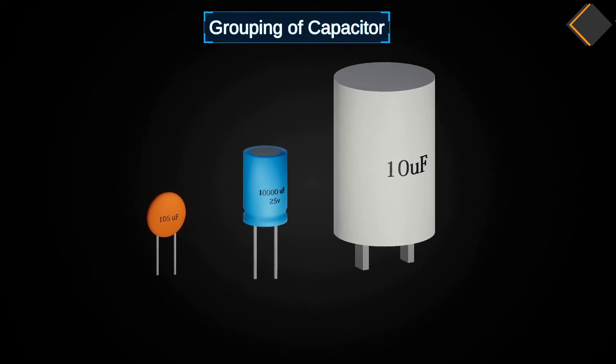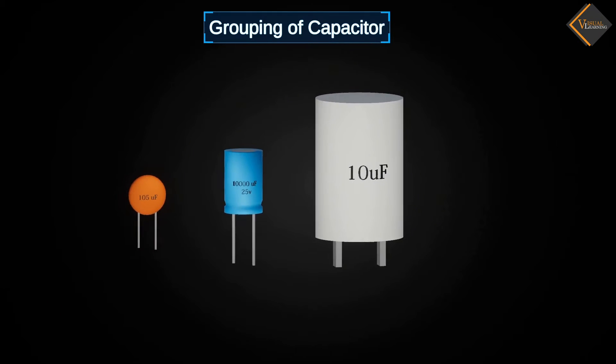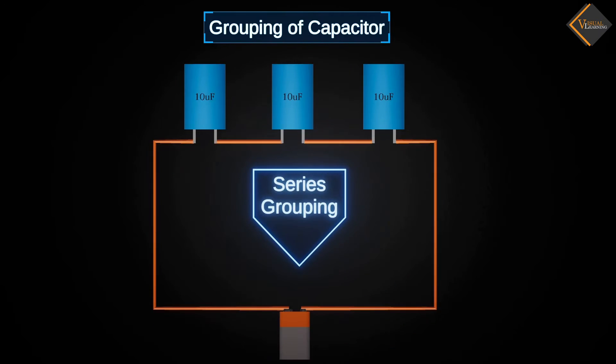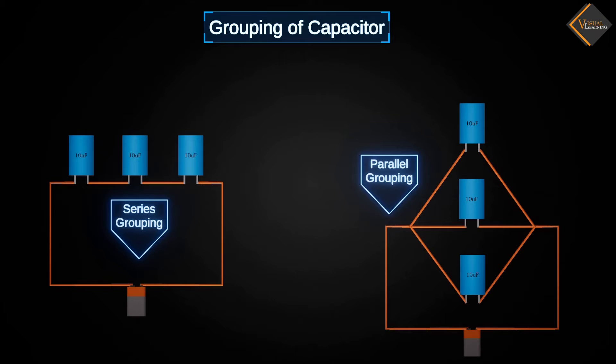Grouping of Capacitors. Grouping of Capacitors can be done in two ways, series grouping and parallel grouping. Let's understand how to calculate the total capacitance in series and parallel grouping.